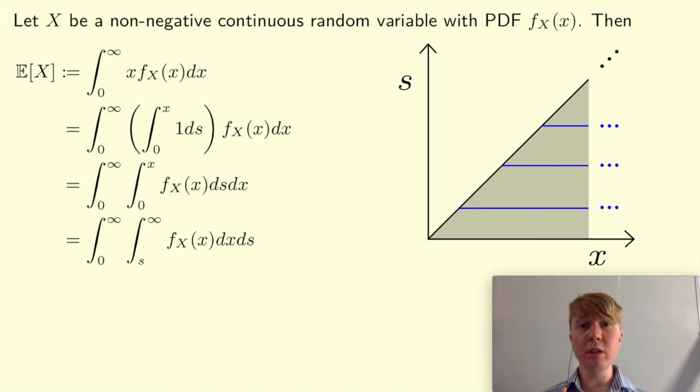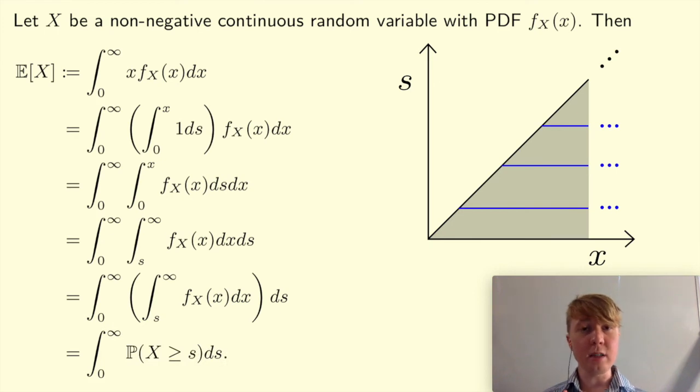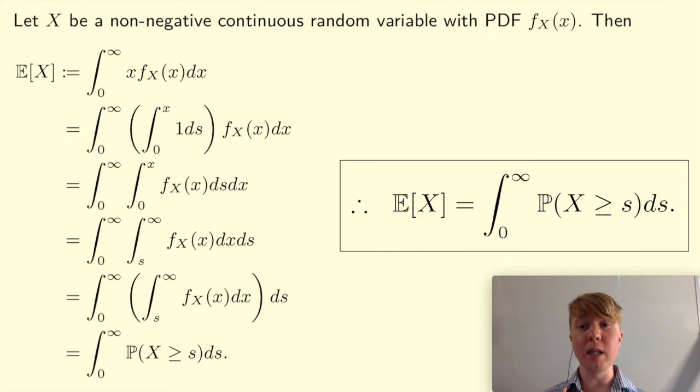So we're almost done now. All you need to do is notice, if I write the inner integral now in brackets, perhaps you can see that when you evaluate this inner integral, this is integrating the probability density function of our random variable x over a certain region. So this is just going to be the probability that you lie in that region. So this is the probability that x is greater than or equal to S. Then this is actually what we set out to prove. So we've now proven this in the case where you've got a PDF. The expectation of x is equal to this integral of the probability that you're greater than or equal to S with respect to S.